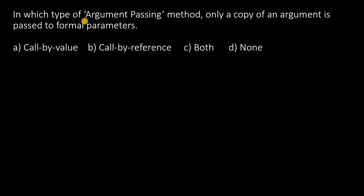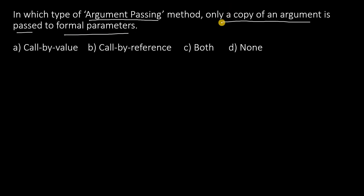In which type of argument passing is only a copy of an argument passed to formal parameters? Remember, in argument passing, whenever you see the term 'a copy', the answer is call by value.